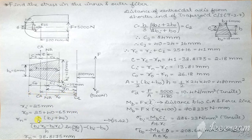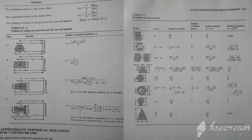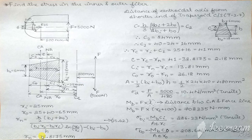To find the Rn value we need to refer to the data handbook, Volume 2, equation number 25.62, in the curved beam chapter. Here is the trapezoidal cross section for which you have the Rn formula — that is the radius of the neutral axis. Substituting these parameters, we get Rn = 38.8175 mm.